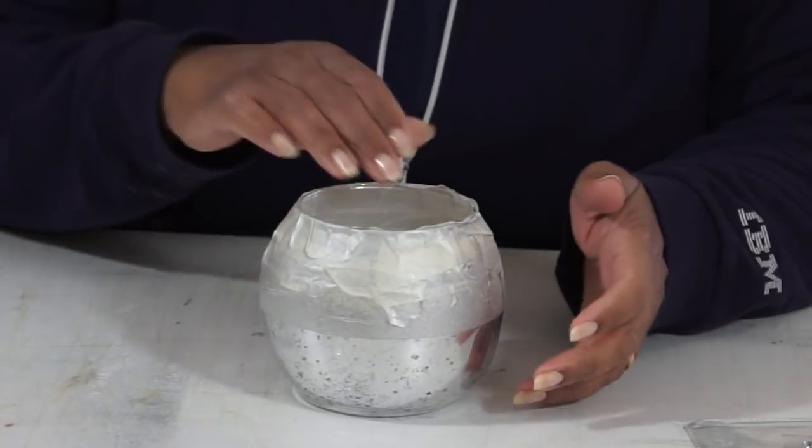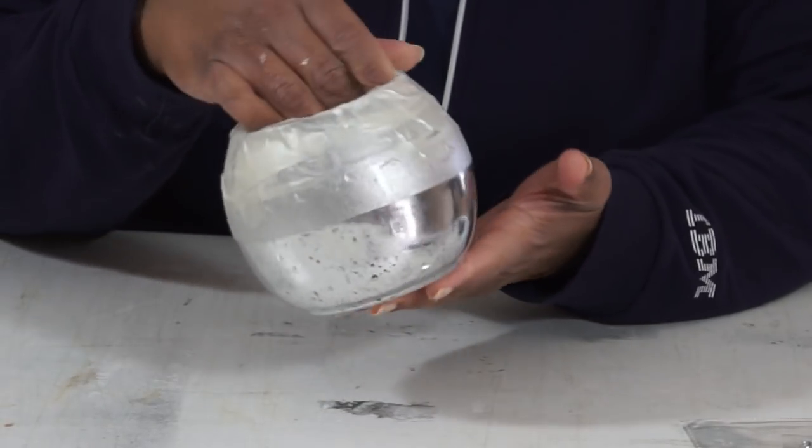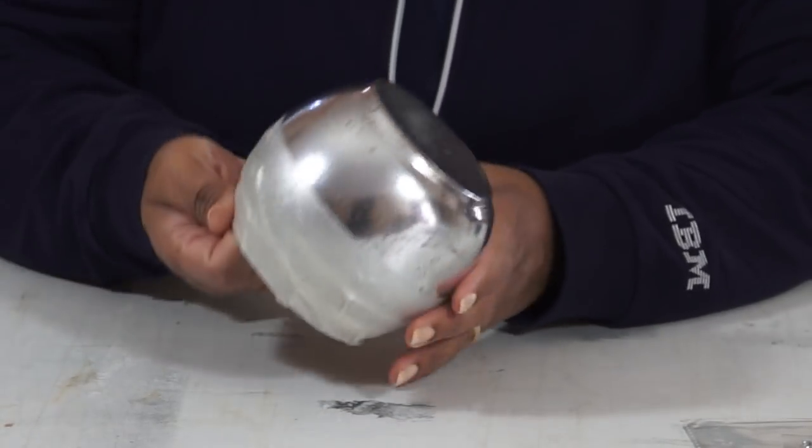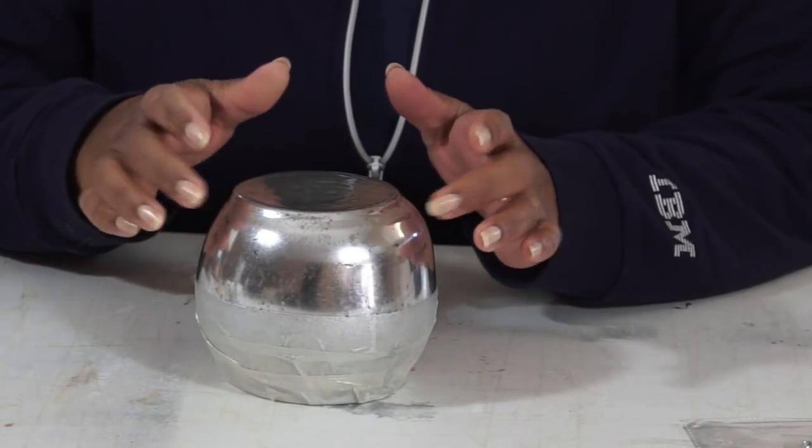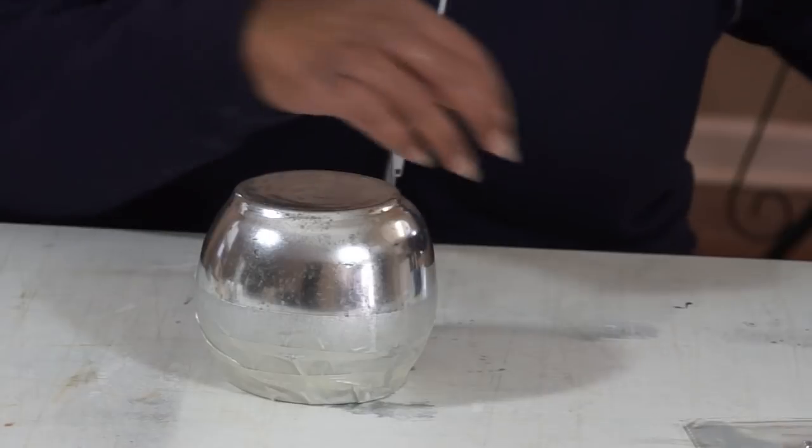Now this mercury glass portion of the vase is done drying so I'm gonna go ahead and just turn it upside down like this and then I'm gonna start adding some of the gemstones to this as well.